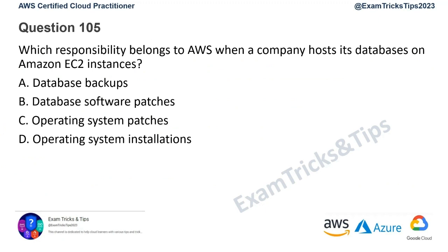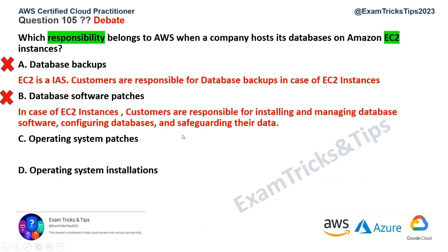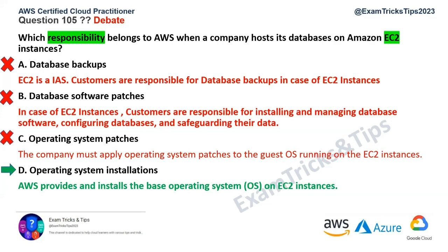Question number 105: Which responsibility belongs to AWS when a company hosts its database on an AWS EC2 instance? The rule is: security of the cloud is the responsibility of AWS, but security in the cloud is the responsibility of the customer. Database backups and database software patches are customer responsibilities, as EC2 is infrastructure as a service. Operating system patches are also the customer's responsibility. However, option D — the original operating system installation — is an AWS responsibility. AWS provides the original operating system based on the EC2 instance you select, such as Linux or Windows, but patches are your responsibility as a customer. The answer is option D.